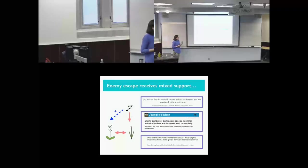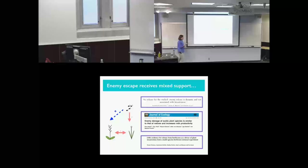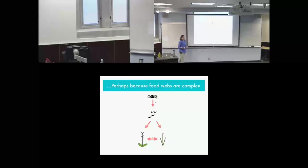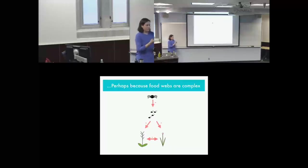In an effort to explain why this hypothesis often fails, it makes sense to take a step back and think about the food web in a broader context. Most food webs are a lot more complicated than just two plants and an herbivore. It's important to consider at least one more trophic level and think about how predators interact with this system, because any herbivores behind enemy escape also have predators consuming them.